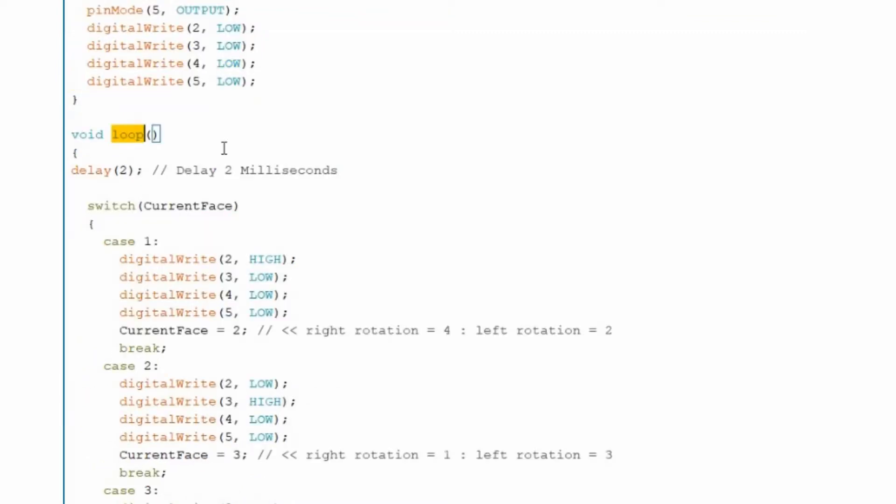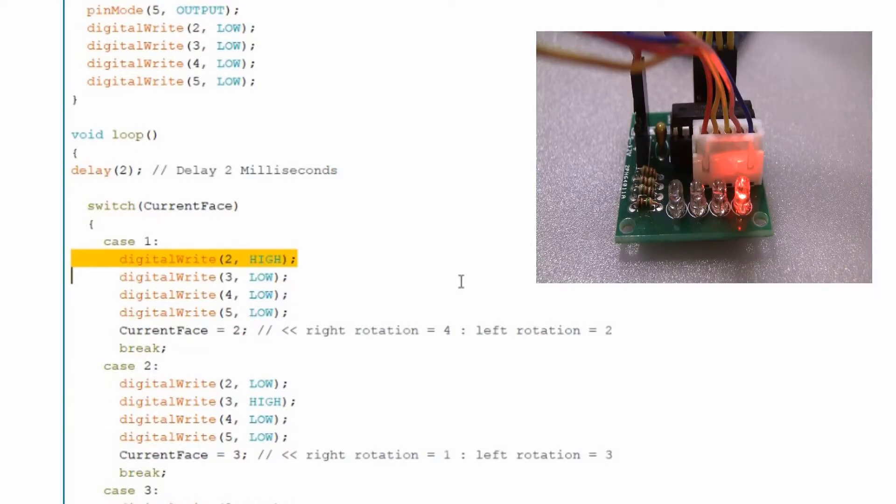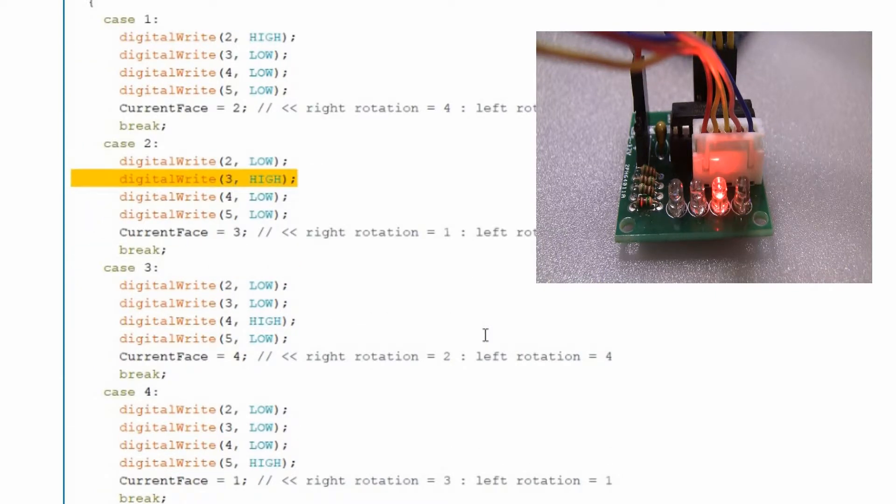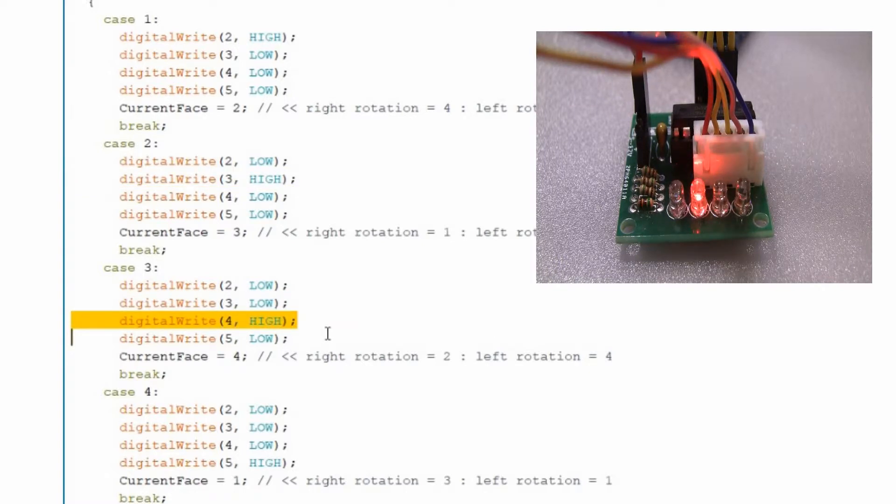On the loop first, set 2ms delays per loop. On case number 1, set pin number 2 high and all the rest set to low. Next, case number 2, set pin number 3 high and all the rest set to low.